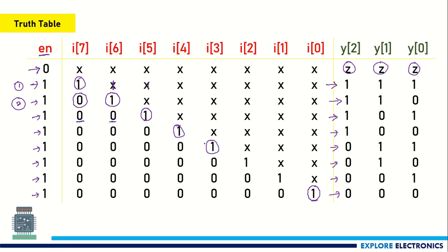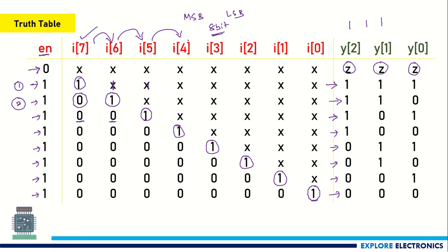So from MSB to LSB, for 8-bit input values, the encoder looks for the highest priority at the MSB. If MSB is 1, irrespective of other values, the output is encoded to 111. If MSB is 0, it looks at the next bit. If that is also 0, it looks at the next, and so on. This priority checking continues, with the least priority given to the LSB. This is how the 8-to-3 priority encoder works.